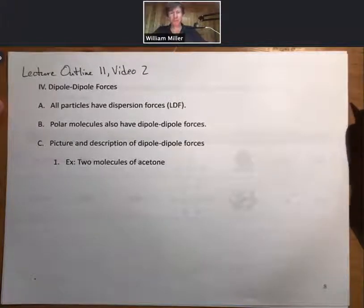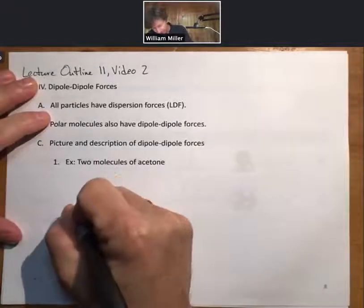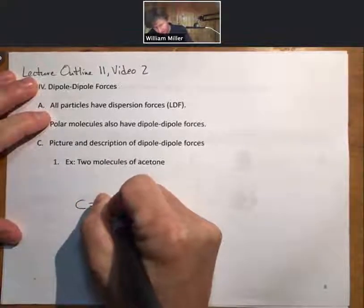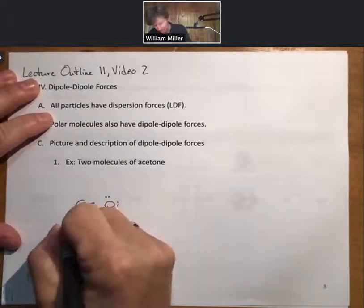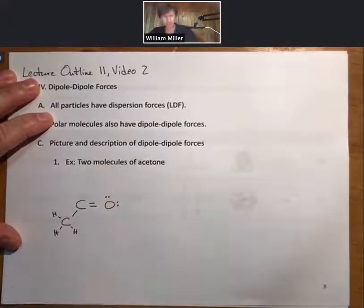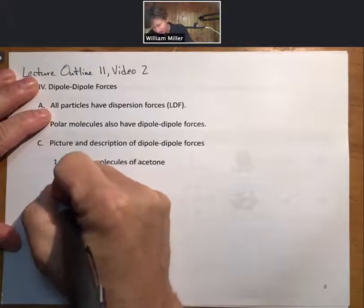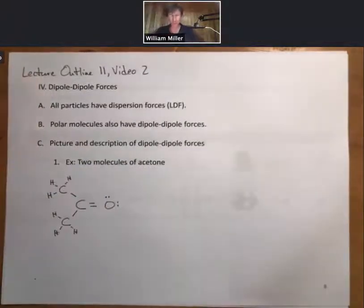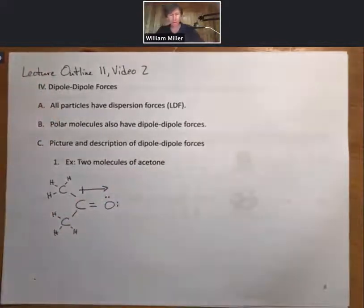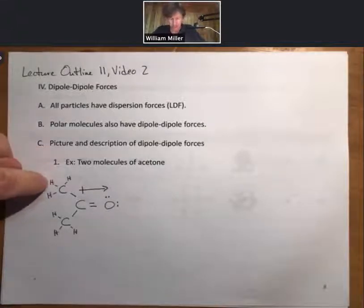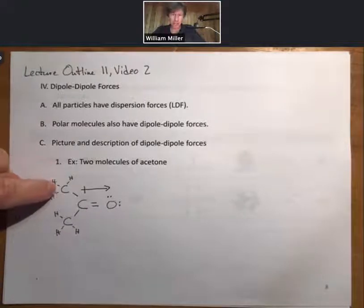Here's a picture and description of dipole-dipole forces using two acetone molecules as an example. I'll draw one acetone molecule, and it oftentimes helps if you draw it in its proper geometry — it's not always necessary to tell that it's polar, but it oftentimes helps. Here's one molecule of acetone, and it is a polar molecule. We can draw the primary dipole here between carbon and oxygen.